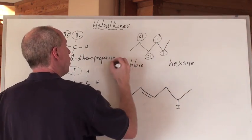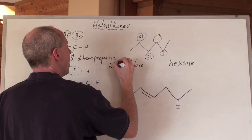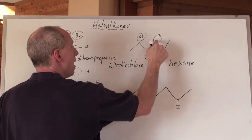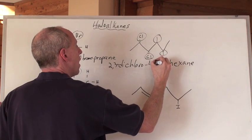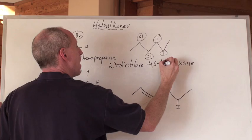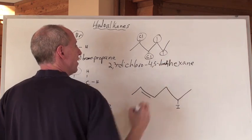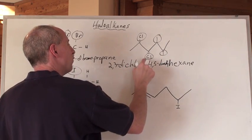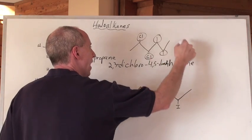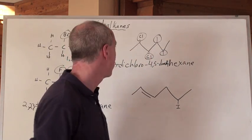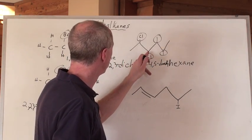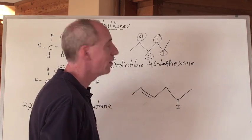Since the chloros are listed first, let's go 2,3-dichloro, and then 4,5-dimethyl. You like that? 2,3-dichloro-4,5-dimethylhexane. See, that's what that one would be right there. One, two, three, four, five. Yeah, all makes sense.